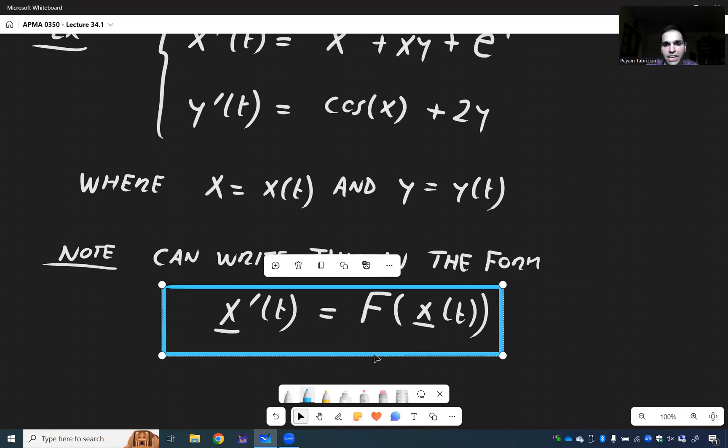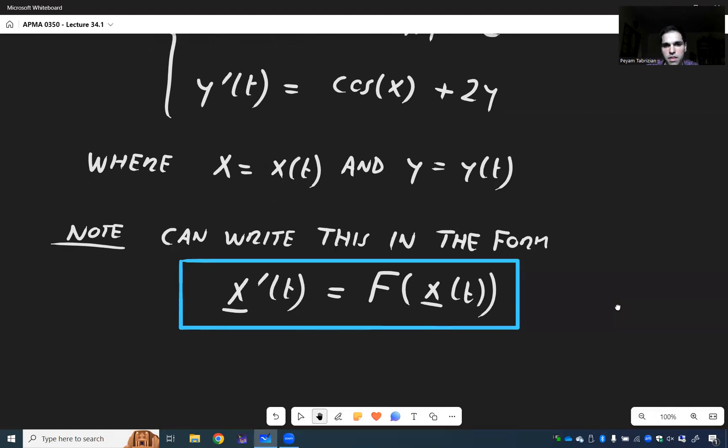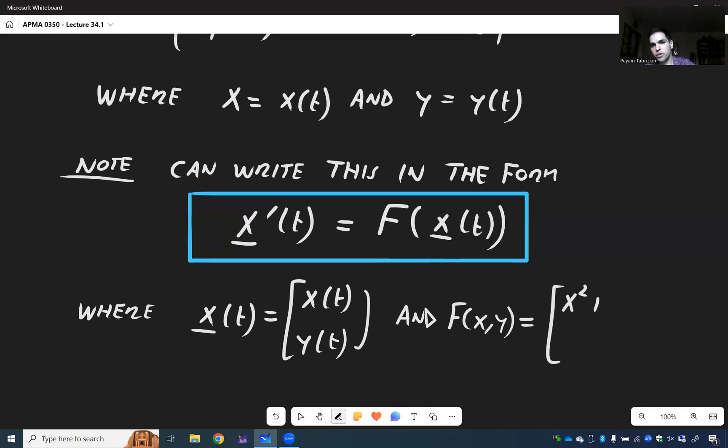Where again, the vector x is our two functions x of t and y of t, and the nonlinear function f of x, y is just x squared plus xy plus e to the y, and cosine of x plus 2y. And once again, compare this with x prime equals Ax. Before A was a linear matrix, but now f is any nonlinear function, just like in multivariable calculus.